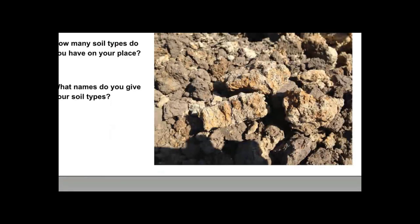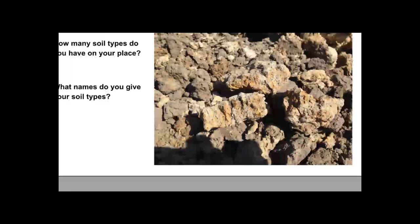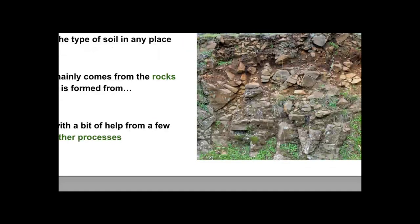How many soil types do you have on your place, and what names do you give them? When I went to the Northern Territory to do workshops, they described their soils as three types: 'yellow, white, and red' — basically very low fertility soil types of different colours. People have very different names for their soil types, but let's get a bit more specific and scientific about defining the aspects of your soil type.